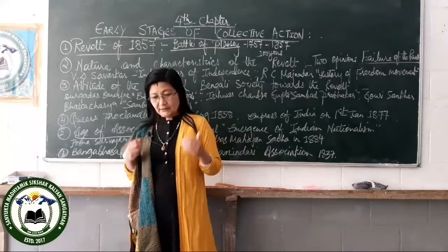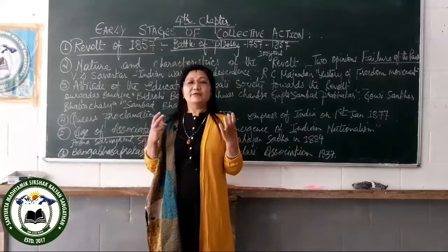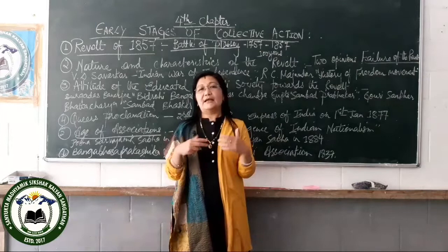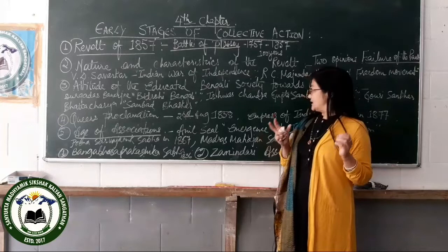Lord Canning called a meeting in Allahabad on behalf of Queen Victoria, and on 1st November 1858 he made an announcement on behalf of Queen Victoria. This announcement was known as the Queen's Proclamation.